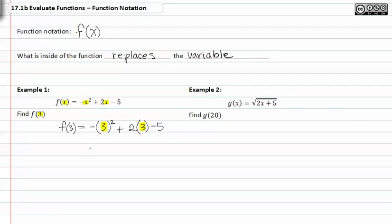We'll get negative nine plus six minus five. So f(3) is equal to negative three minus five or negative eight.